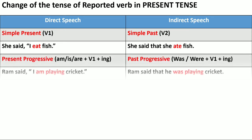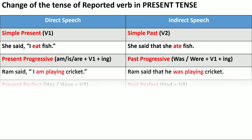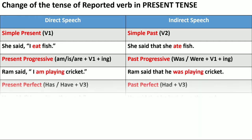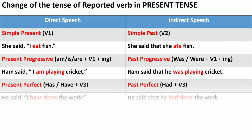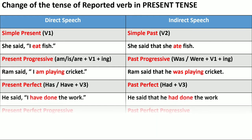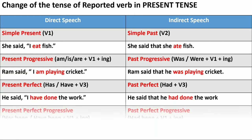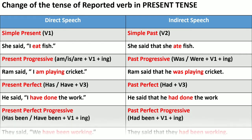Present progressive will also change. For example, 'They said they have been working' becomes 'They said that they had been working.' In this way, present tense will be changed into past tense.